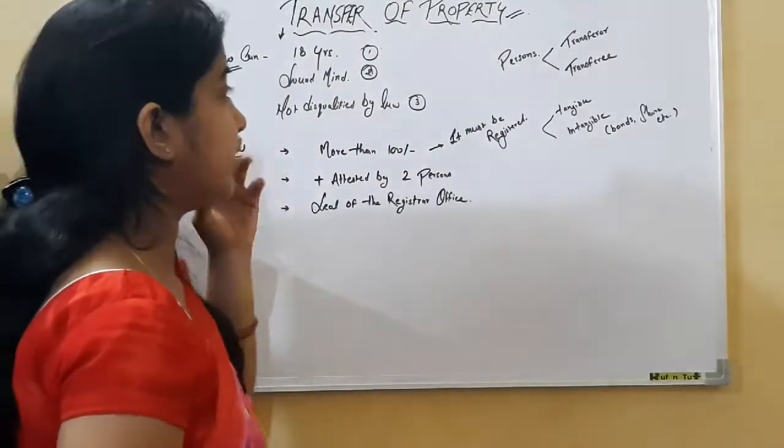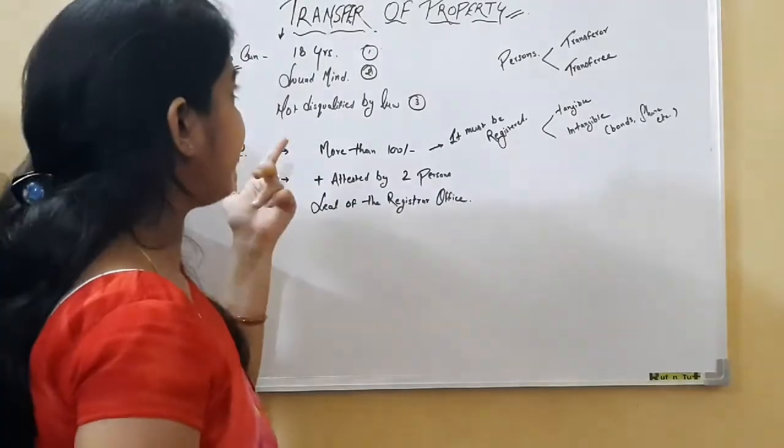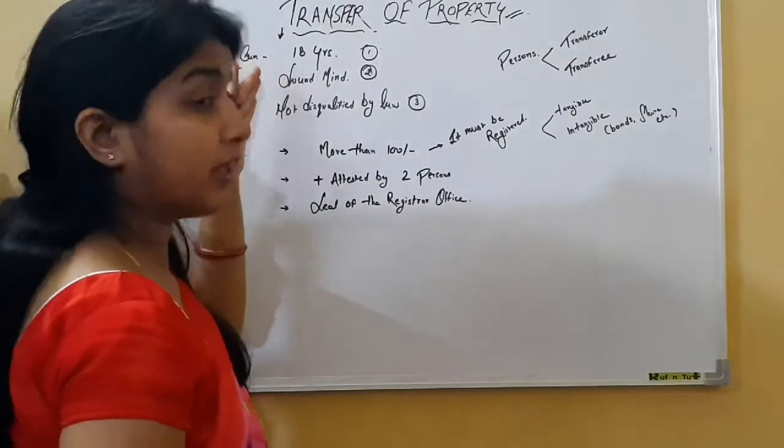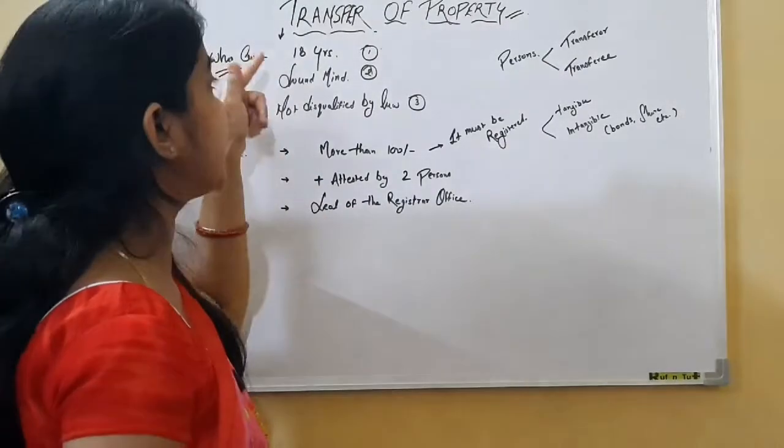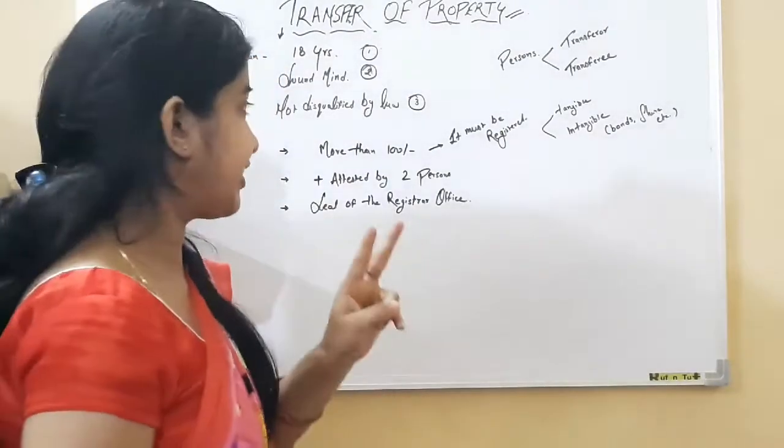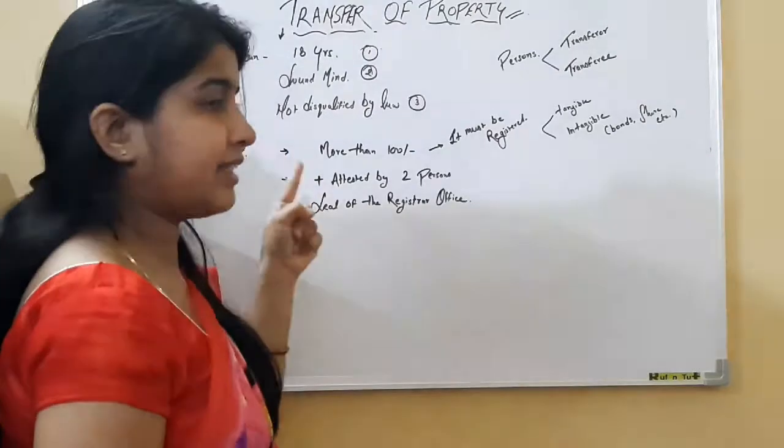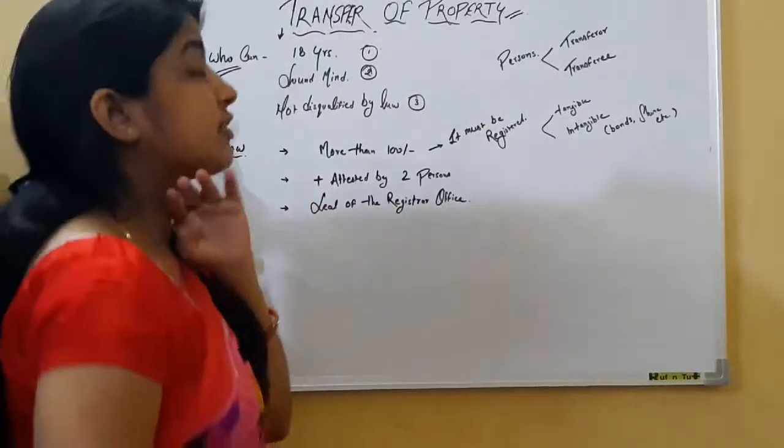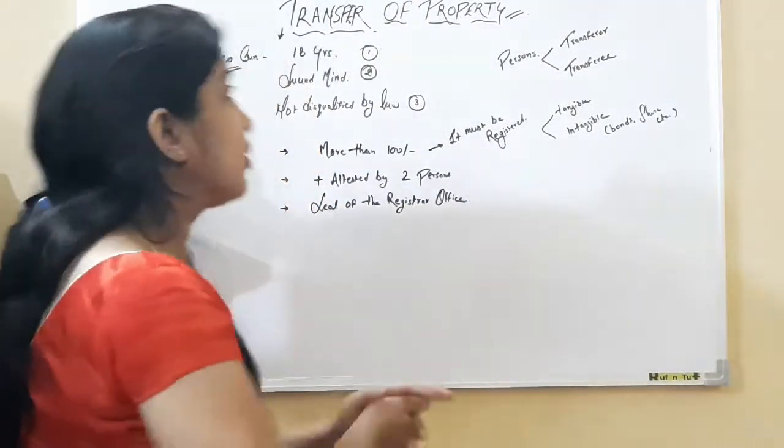Otherwise they will not be able to do a valid transfer. So having a valid transfer, or a person who is qualified to transfer that property, he must be completed the age of 18 years. Second qualification, he must be of sound mind. Third qualification, he must not be disqualified by law.